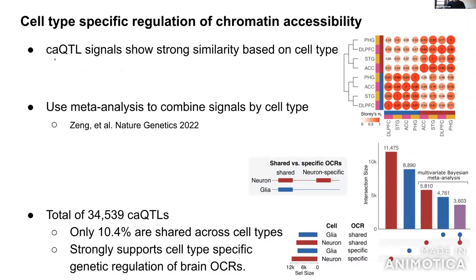Disease biology is cell-type specific, and the chromatin accessibility landscape is cell-type specific. We generated data using ATAC-seq from four different brain regions and two cohorts, sorted into two cell types — neurons and non-neurons (glia: a mixture of oligodendrocytes, astrocytes, and other cell types). This gives us a window into cell-type-specific genetic regulation.